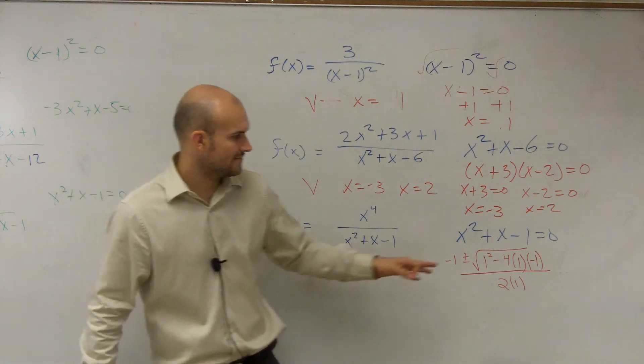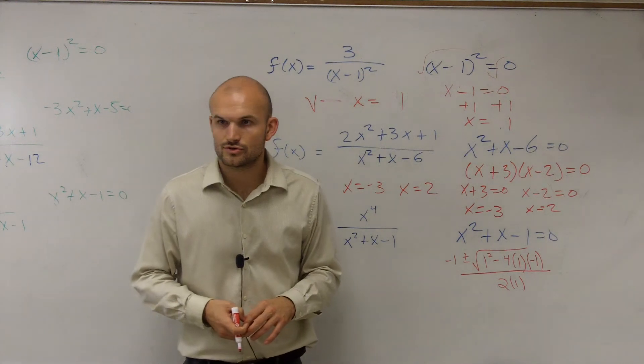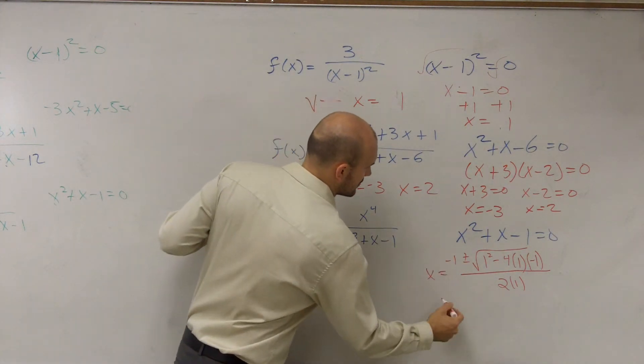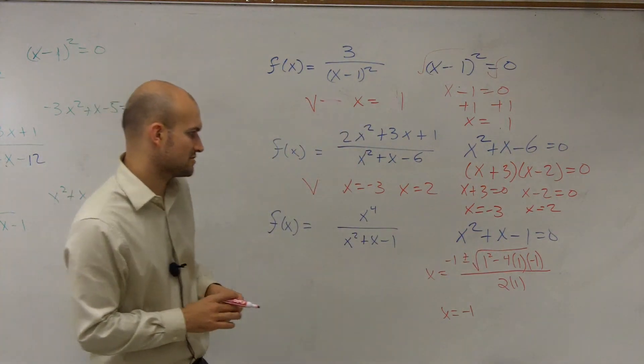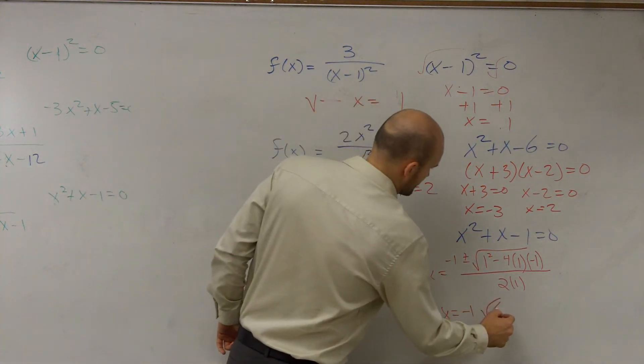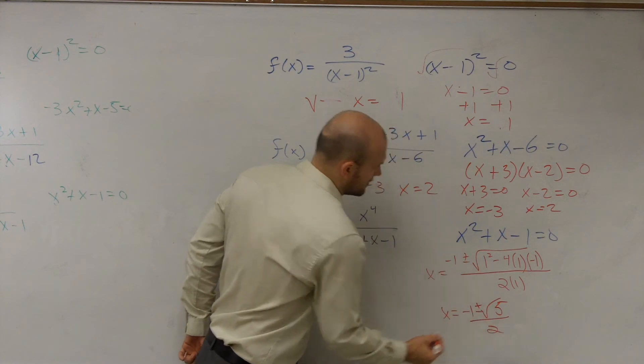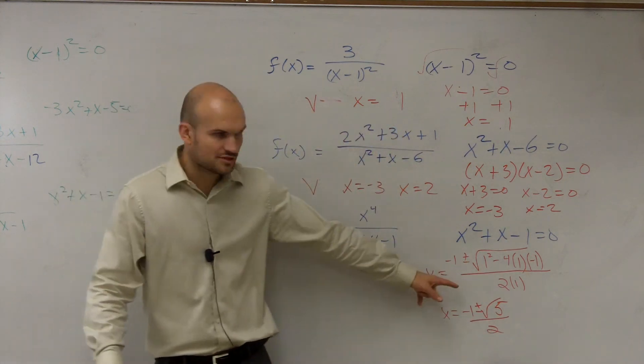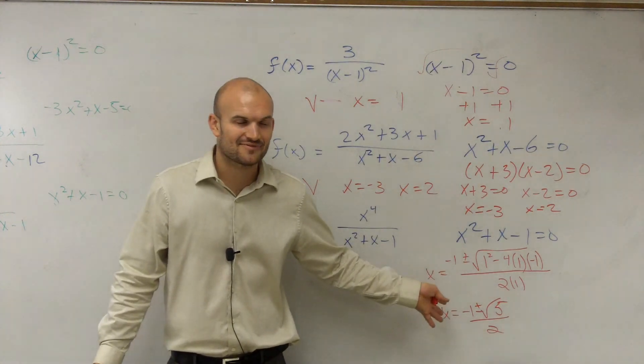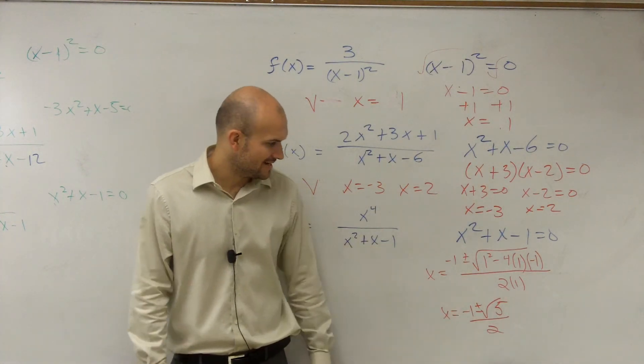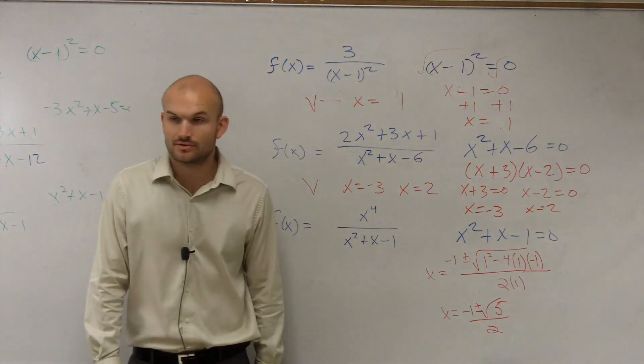So when we look at this, we have negative 4 times negative 1, which is going to be 5. So we have x equals, so negative 1 plus 1, so it's going to be square root of 5 over 2. It's plus or minus. I can't reduce that any more than square root of 5. So I'm going to actually have two vertical asymptotes at negative 1 plus square root of 5 over 2 and negative 1 minus square root of 5 over 2.